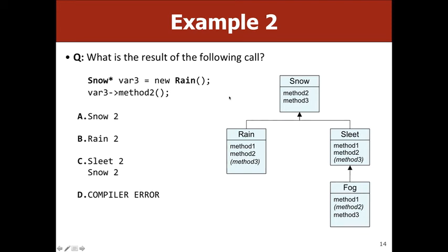Let's say we have var3 — Snow* pointing to new Rain — and we call method2. Our declared type is snow, initialized type is rain. Does snow have a method2? Yes. So we call rain's method2, which prints out 'rain 2'.